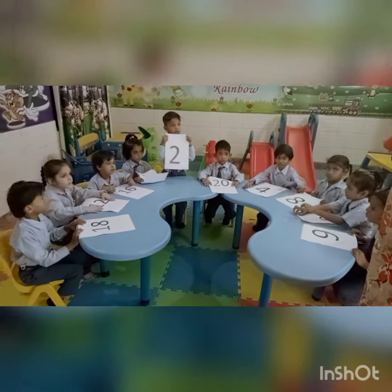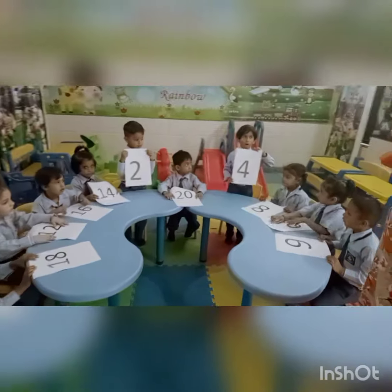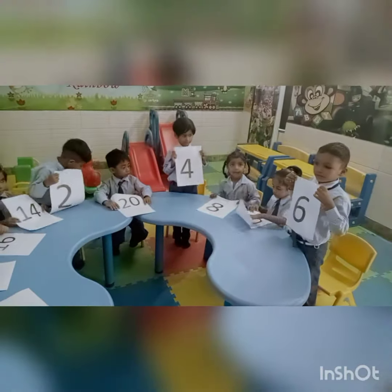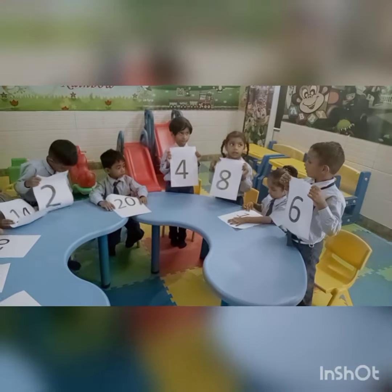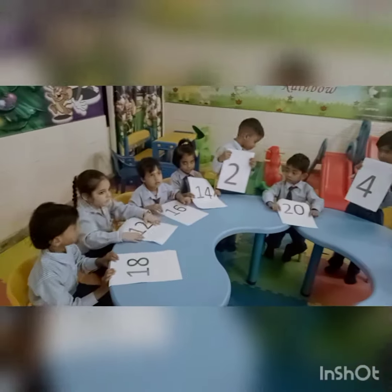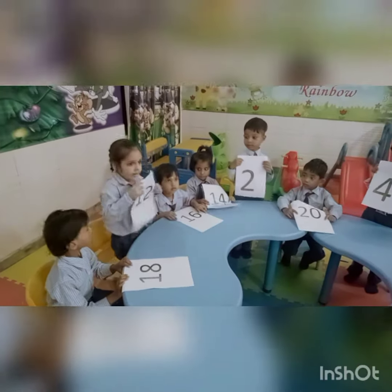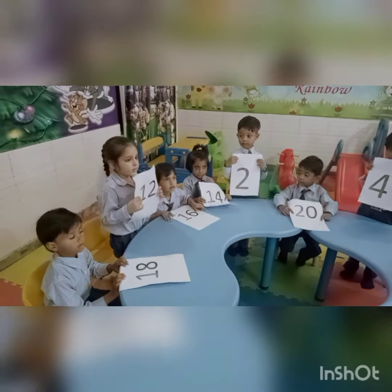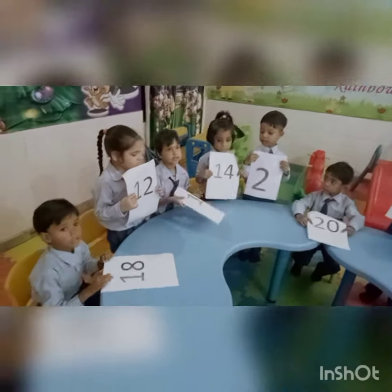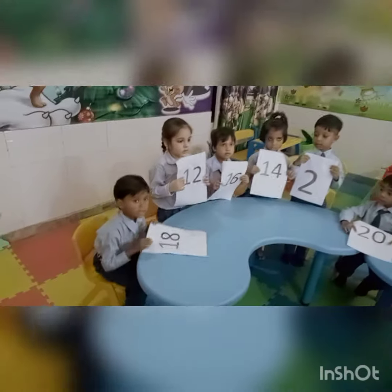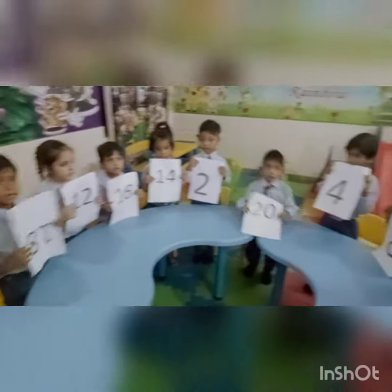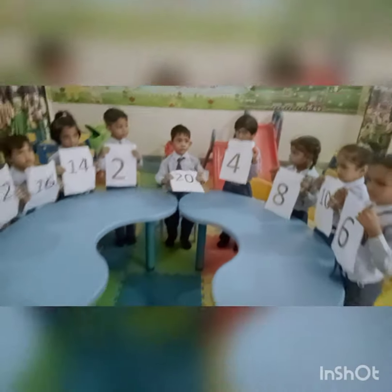Two. Two twos are? Four. Two threes are? Six. Two fours are? Eight. Two fives are? Ten. Two sixes are? Two sevens are? Twenty. Two eights are? Six. Two nines are? Fifty. Two tens are? Twenty. Very good.